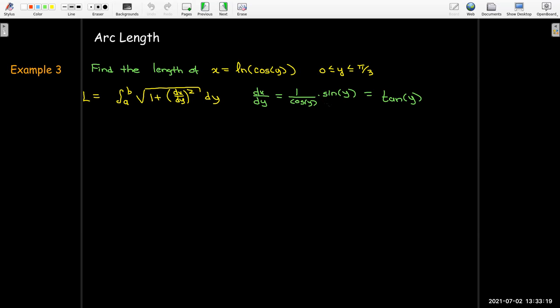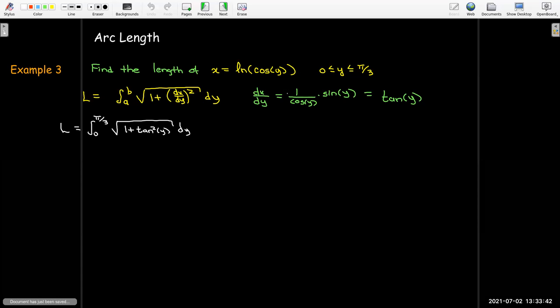So let's go ahead and find the derivative. Derivative of natural log would be 1/cos(y), then use the chain rule. Derivative of cos(y) should be negative sin(y), so I've got a mistake here. Now it didn't impact my final answer, getting that minus sign, because the next step I am going to square dx/dy, and when I square it the minus sign doesn't really matter.